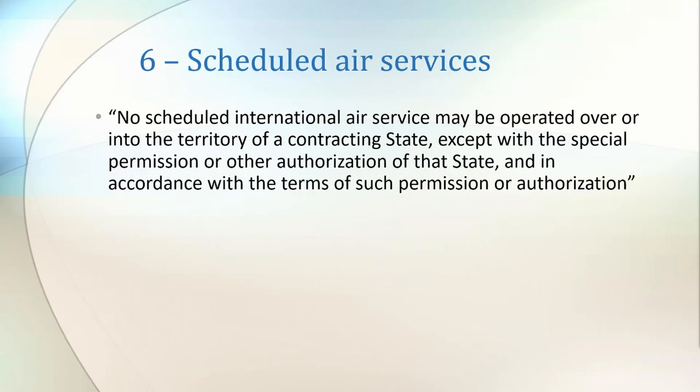Article 6 complements Article 5 by defining the rights of scheduled air services. It states that scheduled international flights do not have the implicit right to overfly another country and they first have to get permission from that state.